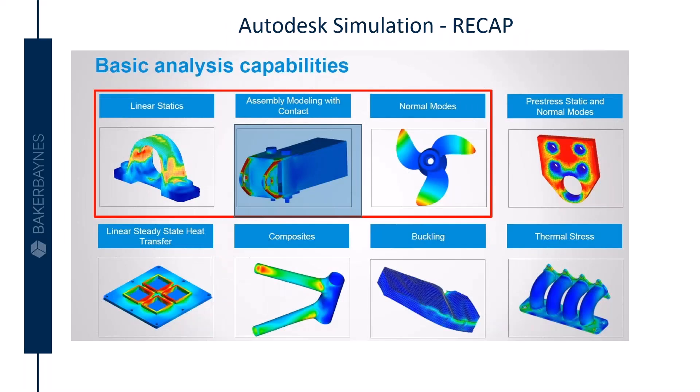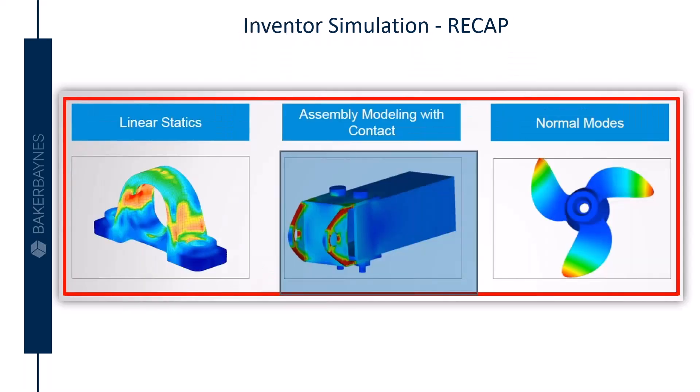If you look at Autodesk mechanical tools on the whole, we find that we've got other capabilities and more extended capabilities. Apart from just the three that we mentioned, you've got pre-static stress for modal analysis, linear steady heat transfer, composites buckling, as well as thermal stress.